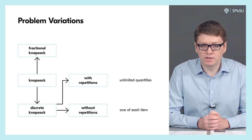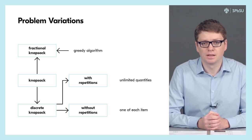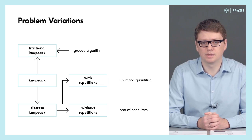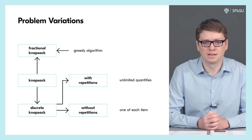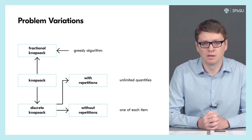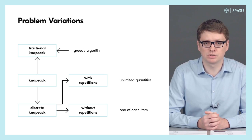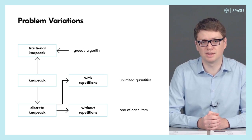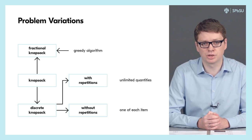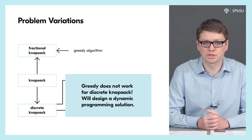As we already know, the fractional knapsack can be solved by a natural greedy algorithm. Namely, we keep repeating the following step: at each iteration we take the maximum amount of the item whose value per unit of weight is as large as possible. It is not difficult to show that this leads to an optimal solution in the fractional case. But this strategy does not work for the discrete version of the knapsack problem.